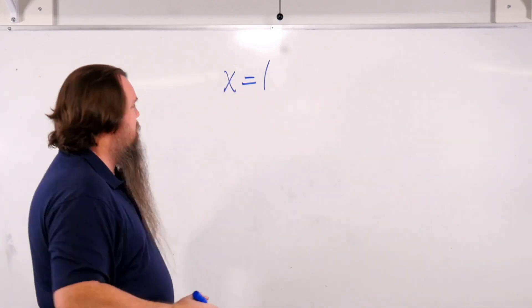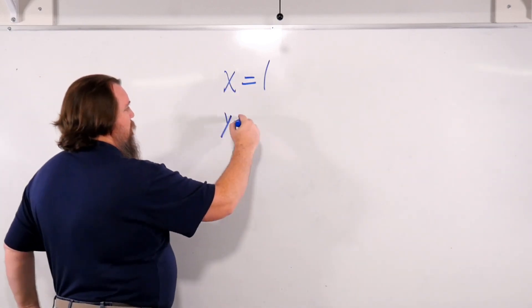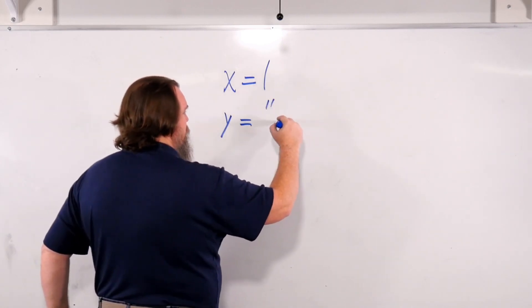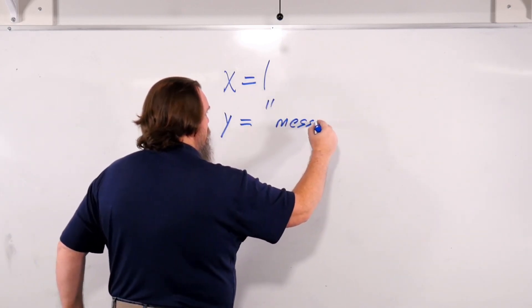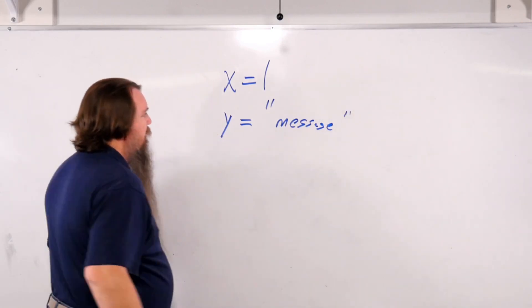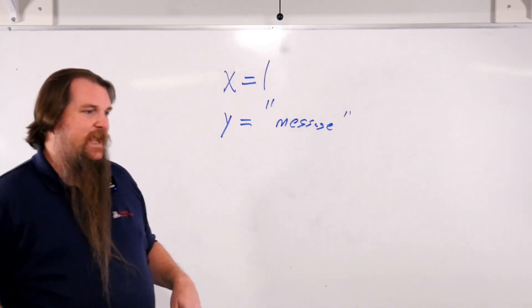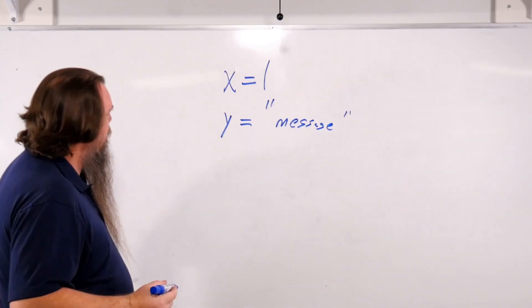No semicolon, we've just assigned a variable. You could say y equals a string. And so now we have two variables, x and y, nothing particularly complex about it.